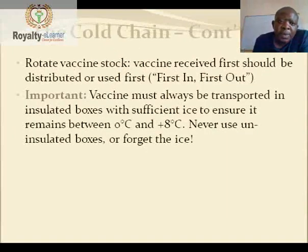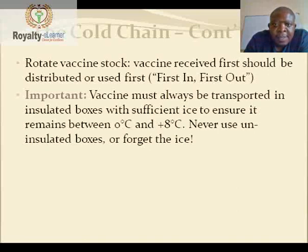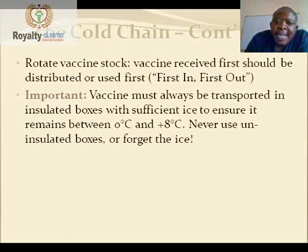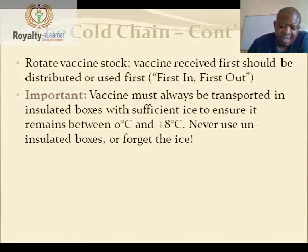Rotate vaccine stock so that vaccines received first are distributed or used first — this is the FIFO approach: first in, first out; first expiry, first out. Vaccines must always be transported in insulated boxes with sufficient ice to ensure they remain between the recommended temperature of 0 to 8 degrees Celsius.